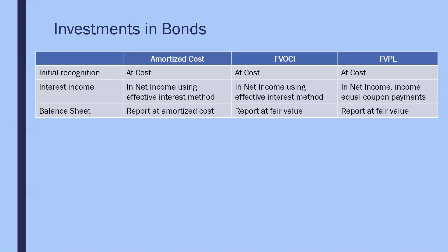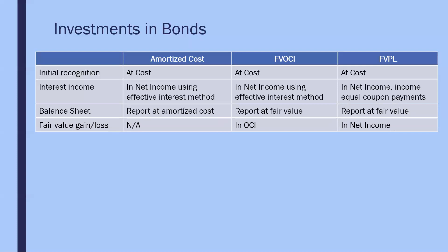The contractual cash flows are used as inputs: the bond's face value is FV, the coupon interest payments are PMT, the number of payments remaining is N, I/Y is the market rate at the date of calculation, and then you compute PV of those cash flows — that becomes the fair value to be reported on the balance sheet. This could trigger a fair value gain or loss. That fair value gain or loss is reported in other comprehensive income for the fair value through OCI model, and in net income under the fair value through profit or loss model.